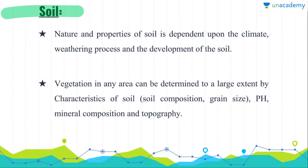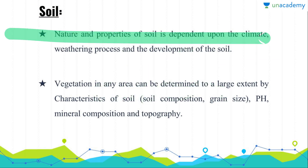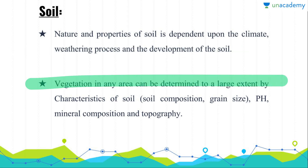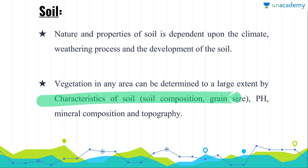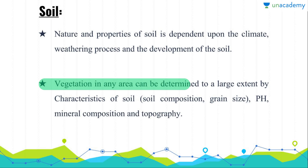Now we have soil. There is a word called 'edaphic' which is related to soil — edaphic means anything related to soil. The nature and properties of soil depend upon the climate, weathering process, and the development of soil. The vegetation in any area can be determined to a large extent by the characteristics of soil: its composition, grain size, pH value, mineral composition, and its topography.